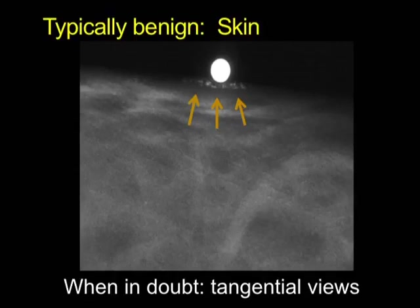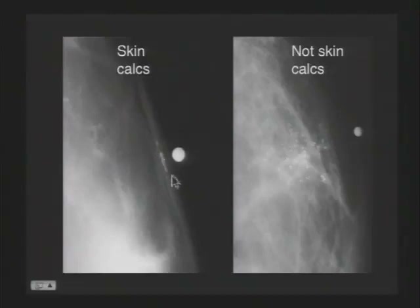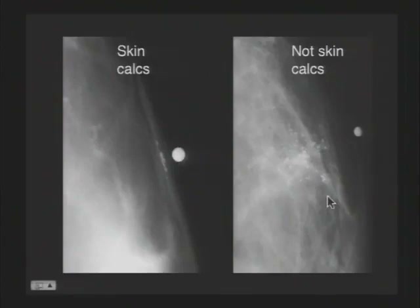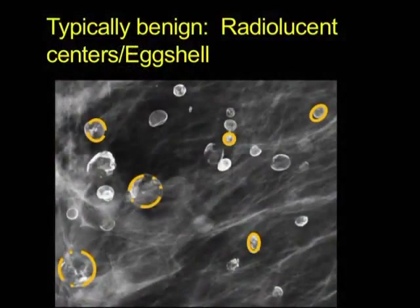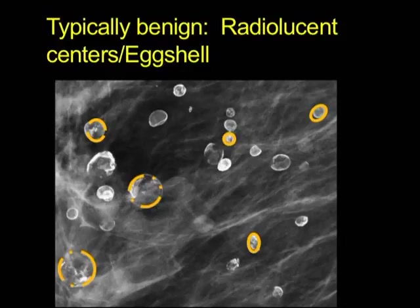One more example: on the left, the calcifications are triangulating to the skin and are benign. On the right, the BB and underlying skin show that the calcifications are within the superficial breast parenchyma — they need additional workup because they are in the breast. The next category is radiolucent centers or eggshell calcifications — they have rims of calcification that can be continuous or discontinuous. These are benign; you can leave them alone.